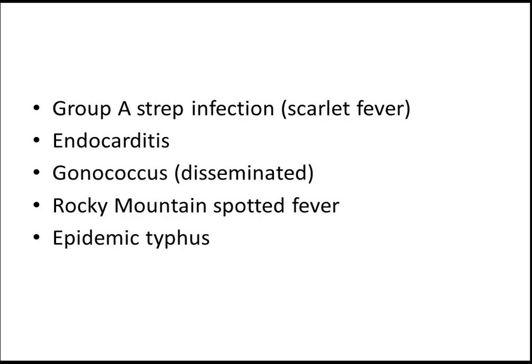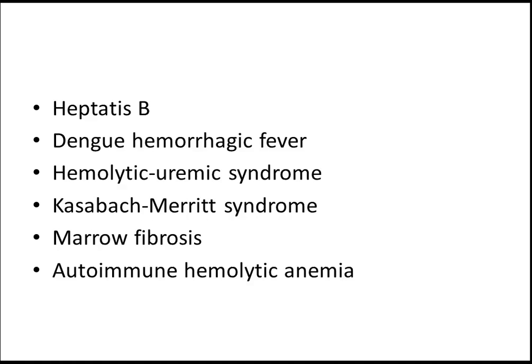Gonococcal infection, Rocky Mountain spotted fever, and epidemic typhus are additional causes. Hepatitis B — you can remember if you want, otherwise no problem. Dengue hemorrhagic fever is a very important topic and a very important cause for purpura in children. It is very deadly, you need to diagnose it correctly and treat it very fast — it is a very fatal disease.